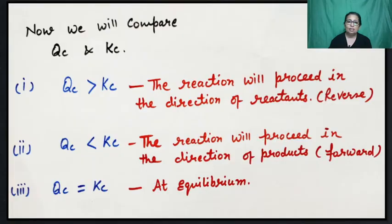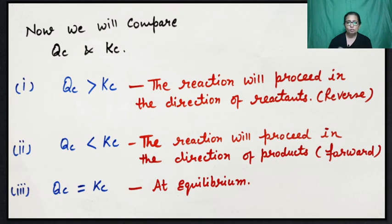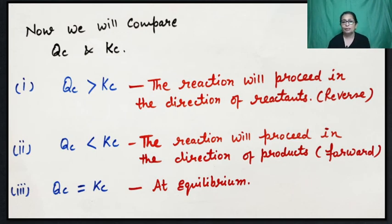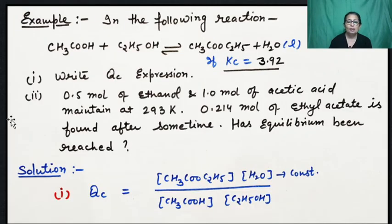So these are the two applications: first, from KC value you can predict to what extent the reaction has been completed; second, by calculating QC and comparing with KC you can tell the direction of the reaction — whether it is proceeding forward, backward, or is at equilibrium. The third application involves numerical calculations of equilibrium concentrations, which we have been practicing and will continue with important questions.